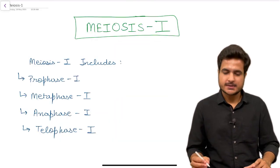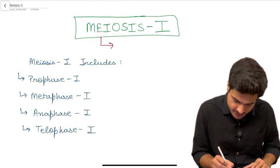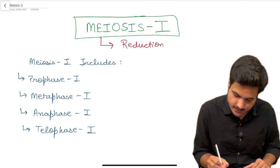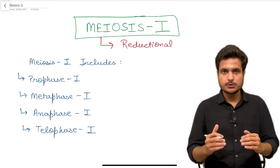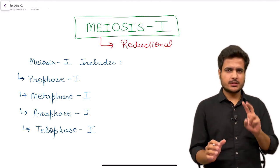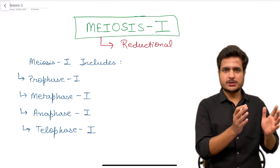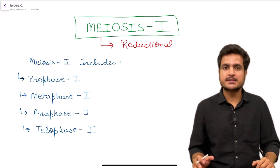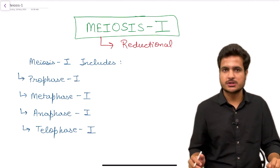Hello everyone. In this video we will be discussing meiosis 1. We all know that meiosis means reductional division, meaning the number of chromosomes present in a parent cell would be reduced when transferred to the daughter cell. Meiosis is a two-stage process: meiosis 1 for the first stage and meiosis 2 for the second stage.